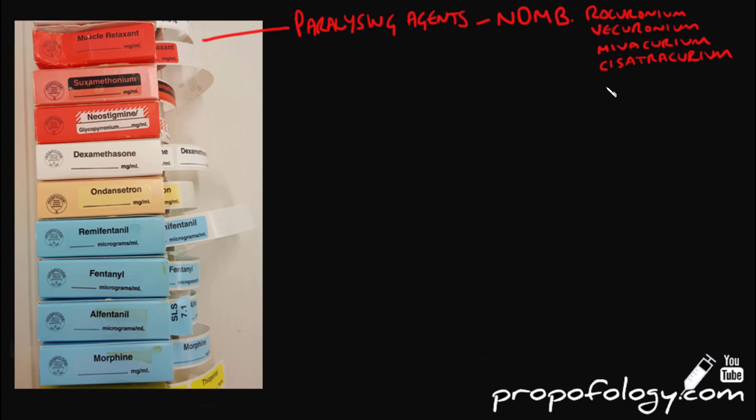Examples include rocuronium, vecuronium, mivacurium, cis-atracurium and atracurium. Most of these drugs, depending on dose, are slower than the depolarizing muscle relaxant succinylcholine. Succinylcholine has a very rapid onset and because it causes chaotic depolarization of the muscle, you will see fasciculations before flaccid paralysis. These fasciculations can be used as an endpoint to tell the anesthetist when it is time to intubate the patient.